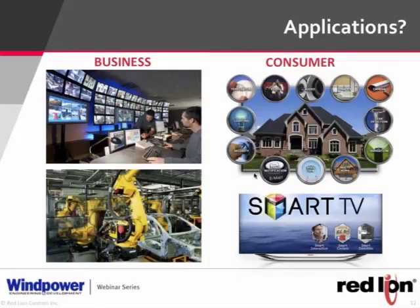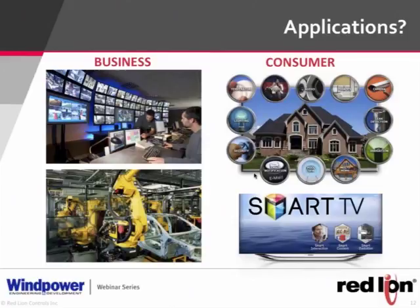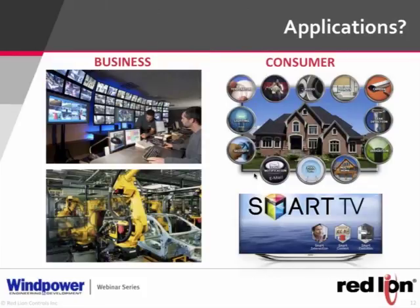Most smart TVs today have an Ethernet jack or built-in Wi-Fi — something unimaginable ten years ago. People are streaming all their media and dropping cable and satellite. Cell phones have replaced landlines. Ethernet is at the core of all of this: businesses, consumers, home automation, process control in manufacturing, and media streaming. As bandwidth demands grow, Ethernet keeps pace.